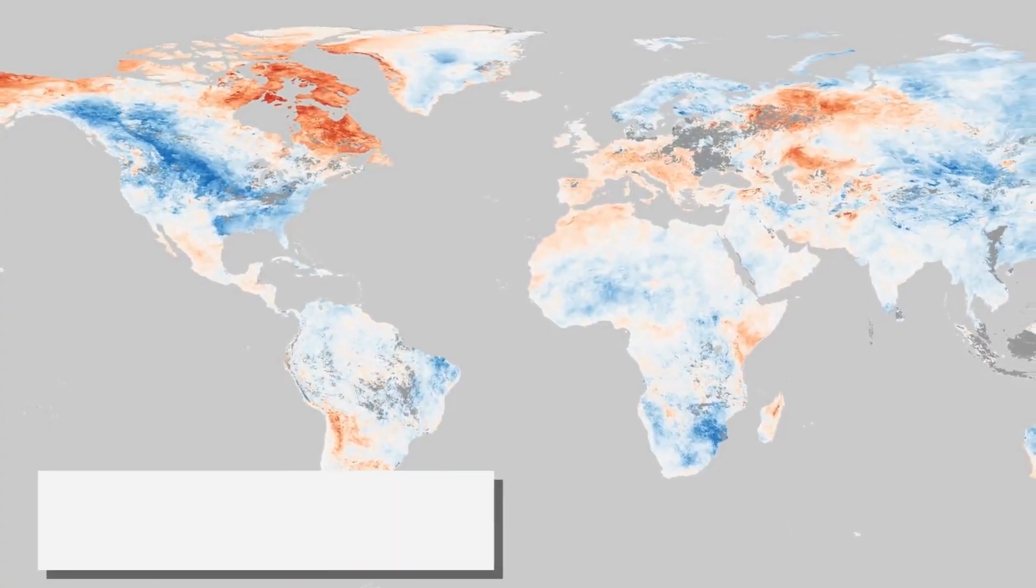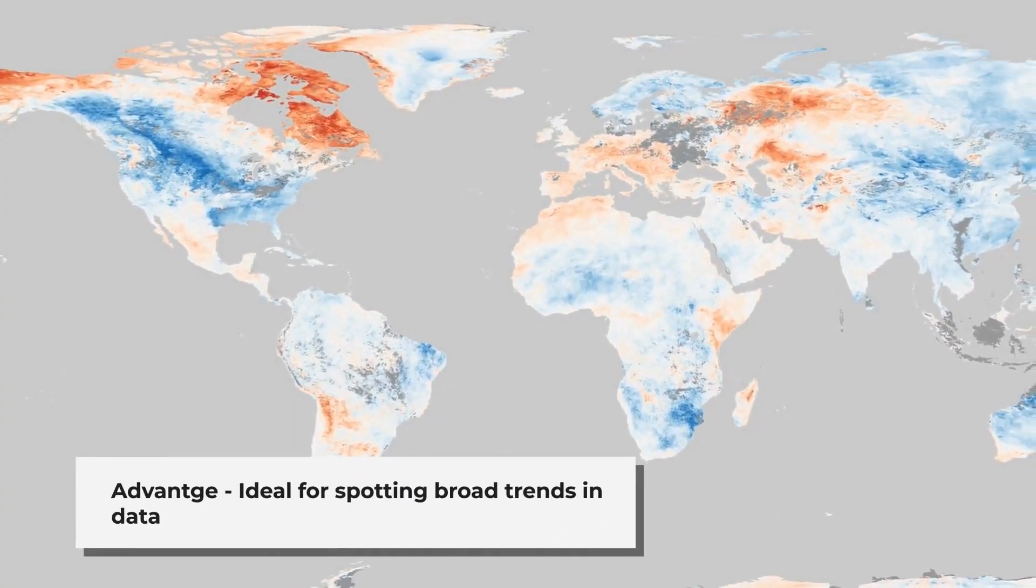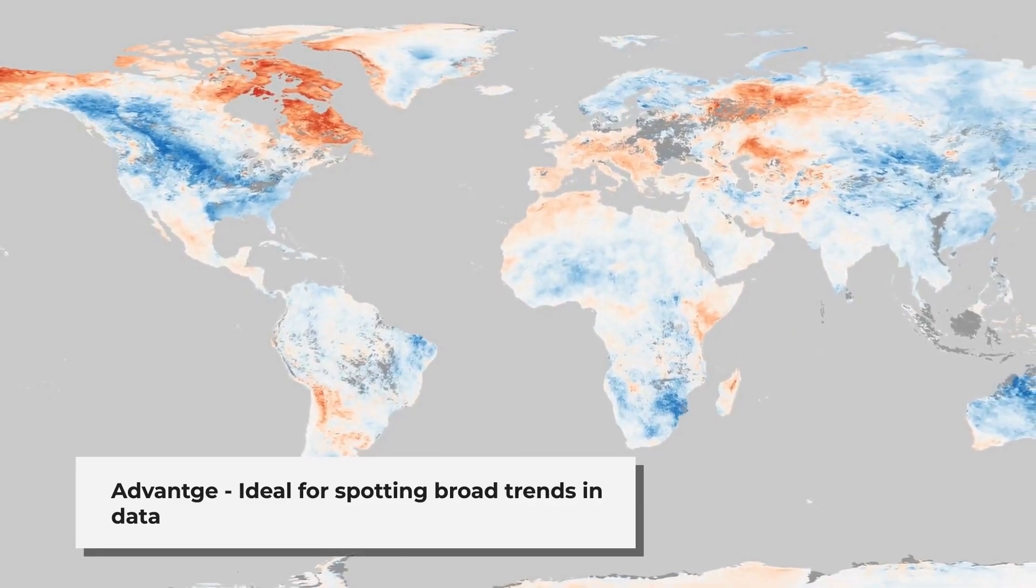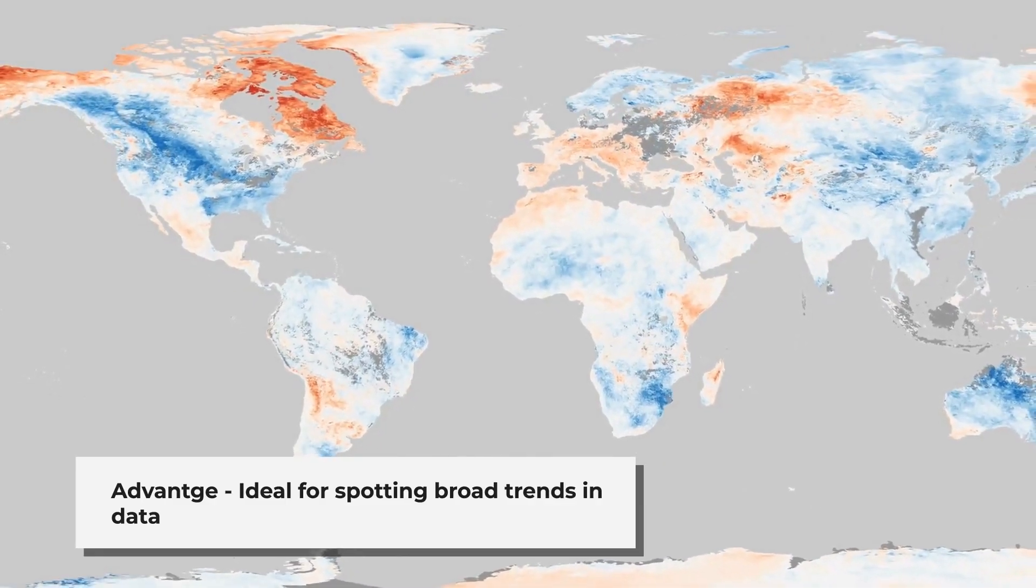Advantages of trend interpolation: Trend interpolation is perfect for identifying broad trends, like temperature gradients or general terrain slopes.